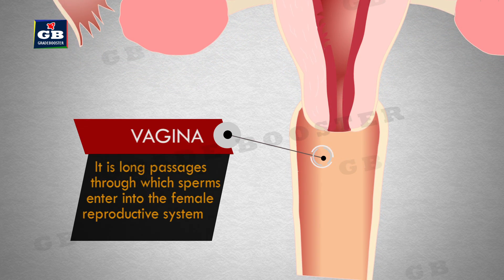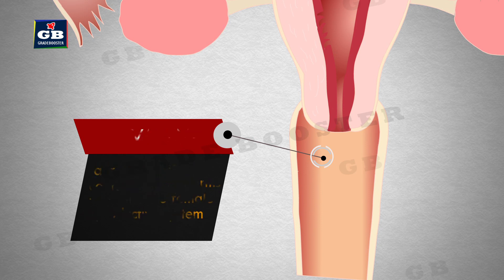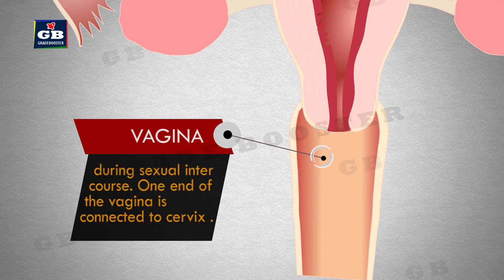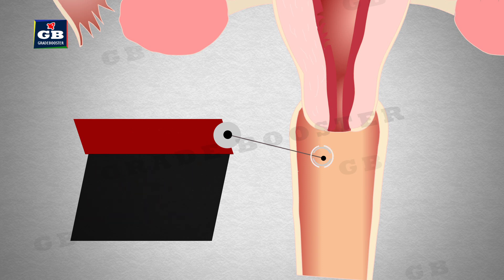Vagina: it is a long passage through which sperms enter into the female reproductive system during sexual intercourse. One end of the vagina is connected to the cervix and the other end opens out.